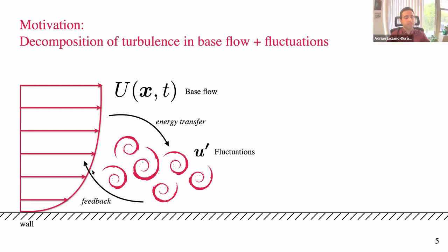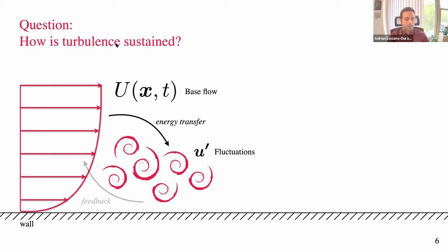This is a nonlinear problem, so fluctuations also affect back the base flow. What I want to understand is: how is turbulence sustained? Turbulence here means the fluctuations — the chaotic, multi-scale chaotic motion of the flow contained in U prime. Another way of asking this more specifically is: how is U prime sustained?